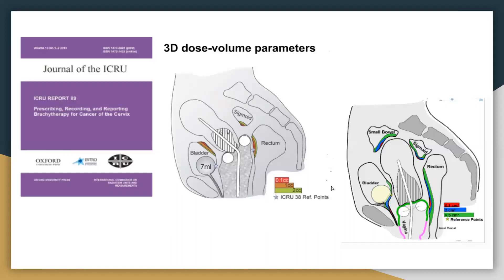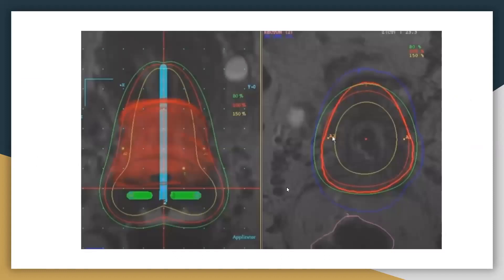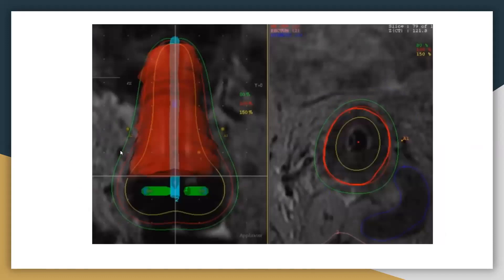This is where you can do it. 3D dose ICRU guideline can be followed and we should report these values. The problem with the Manchester system is that if the tumor volume is large, then it will be underdosed. But if the tumor volume is small, then point A will be overdosed. So for the 3D plans, one should optimize according to the volume. Don't follow the typical Manchester system.